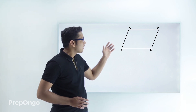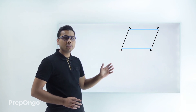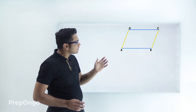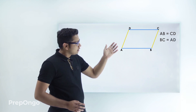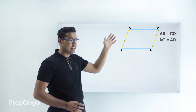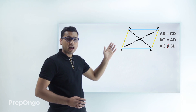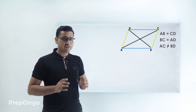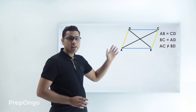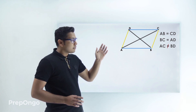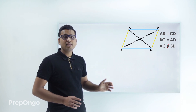First is a parallelogram. If you look at this parallelogram you will find out that the opposite side lengths are equal. So we can say that AB distance equals CD distance and BC distance equals AD distance. In case of a parallelogram, the length of diagonals AC and BD will not be equal.